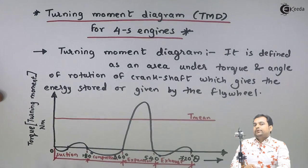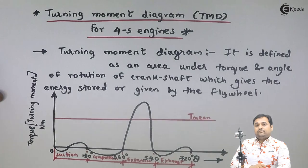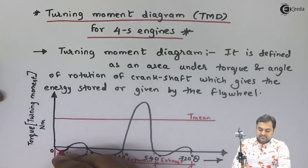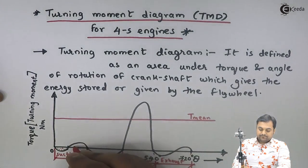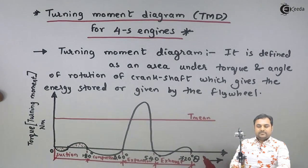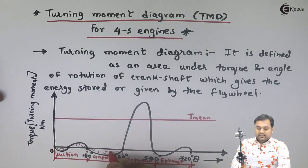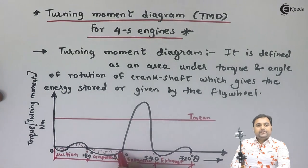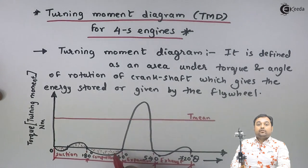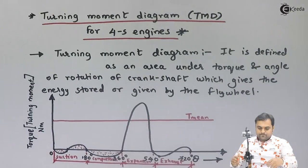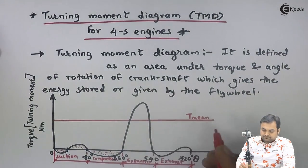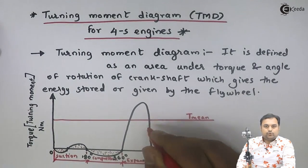During the suction stroke we see a small negative loop followed by a small positive loop — this means energy is taken from the engine, which is why the work is negative. Similarly, from 180 to 360 degrees in the compression stroke, we again get a negative loop, meaning work is consumed by the engine.